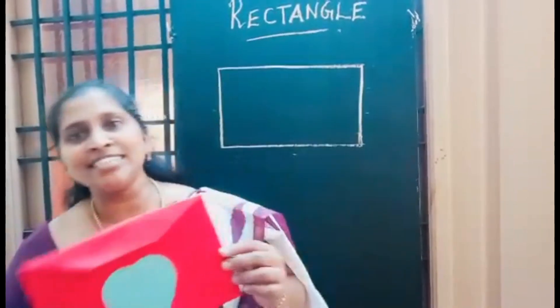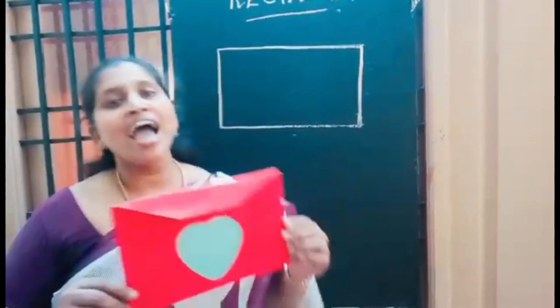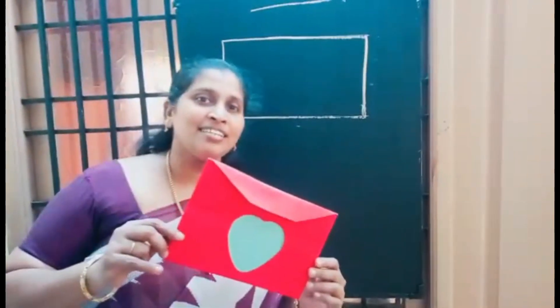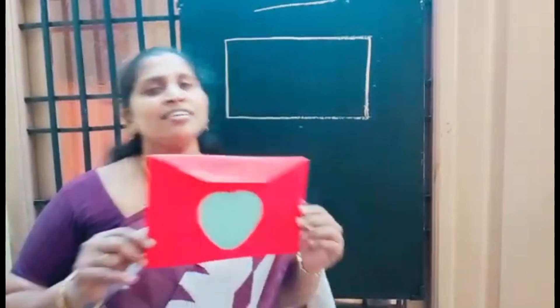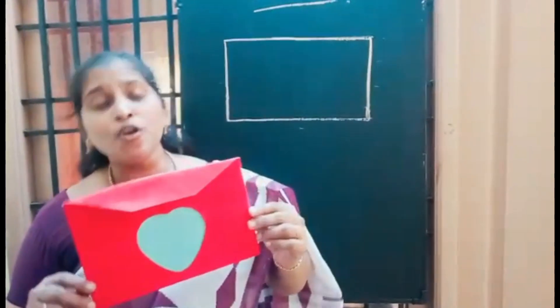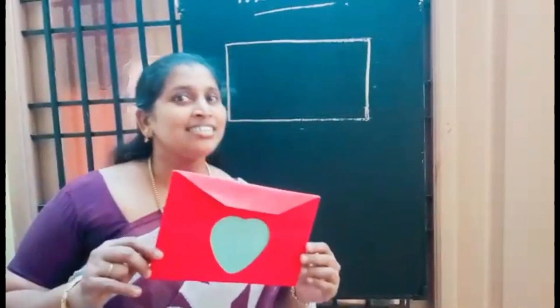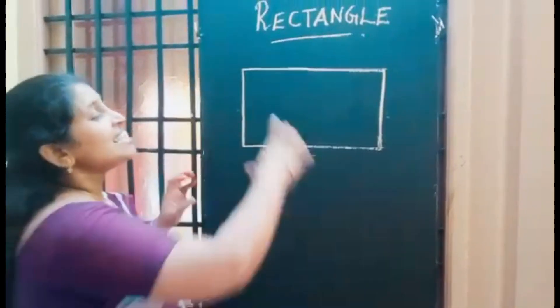I'm a rectangle, like a really long square. I have four sides. I'm a rectangle, rectangle. I'm a rectangle, rectangle, like a really long square. I have four sides. I'm a rectangle, rectangle. See the shape of a rectangle.